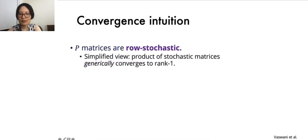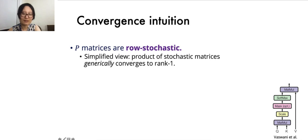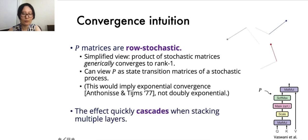But just why should self-attention converge? While our actual proofs are much more nuanced, here's some simplified intuition. The output of the softmax normalization in attention is a row stochastic matrix. The path decomposition shows that the self-attention output involves a product of such stochastic matrices, and products of stochastic matrices have been shown to generically converge to rank one. Note that this simplified view would only yield exponential convergence, rather than doubly exponential.